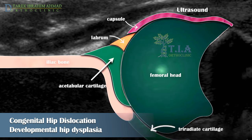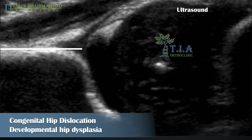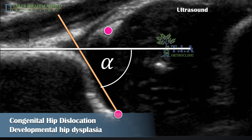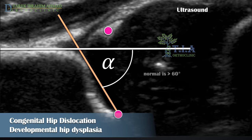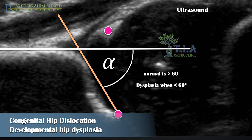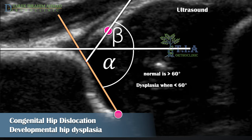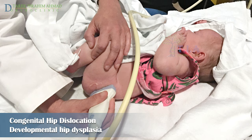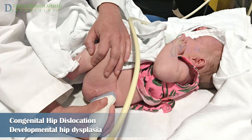Ultrasound allows visualization of bony acetabular anatomy, the femoral head, labrum, ligamentum teres, and hip capsule. The most commonly used measurement is the alpha angle — the angle created by lines along the bony acetabulum and the ilium. An alpha angle greater than 60 degrees is considered normal; dysplasia is present when it is less than 60 degrees. The beta angle, formed by lines along the labrum and the ilium, is normal when less than 55 degrees. The hip is also examined for stability in the same manner as the Barlow test, using ultrasound instead of relying on the doctor's feel.